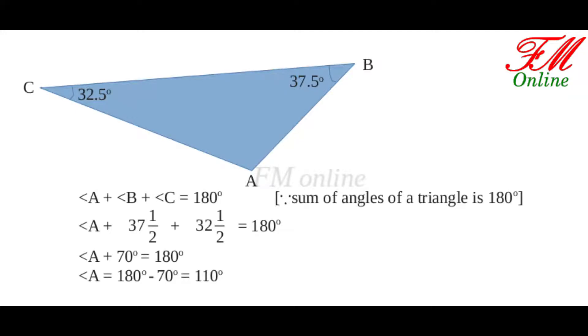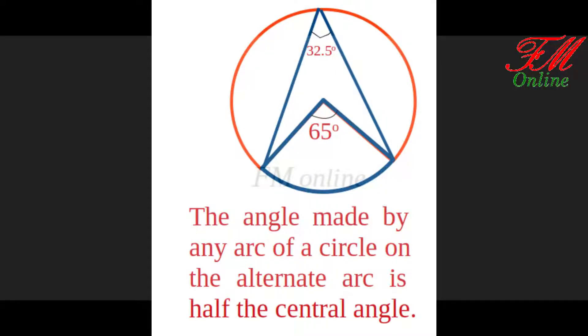Now we have the three angles of the triangle, but we cannot use a protractor to find 32.5 degrees and 37.5 degrees.